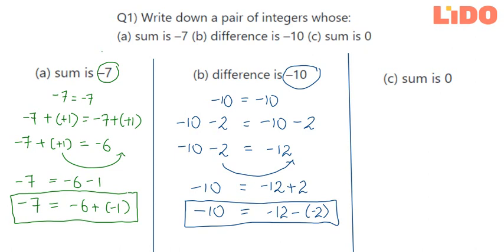Let us try solving the last subsection of this question which is the sum of two integers should be 0. Let us start with 0 is equal to 0 and I am going to add a random integer on both sides. That is the first step. In the second step, I am going to retain the LHS as it is and simplify the RHS.